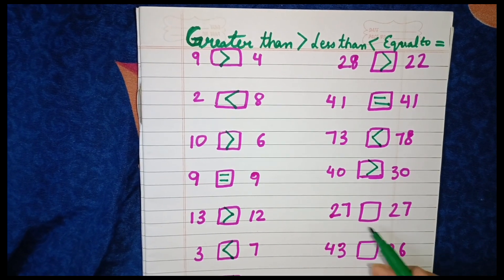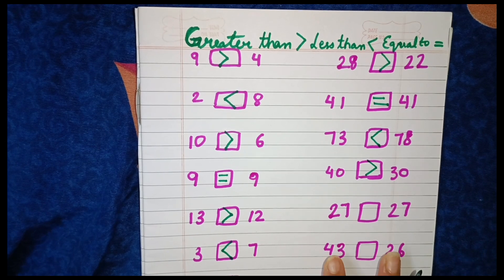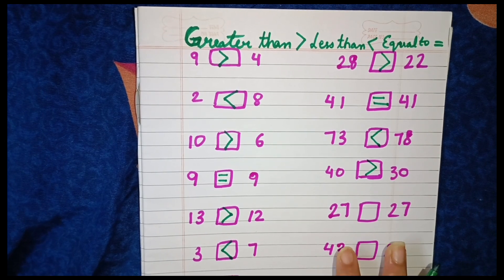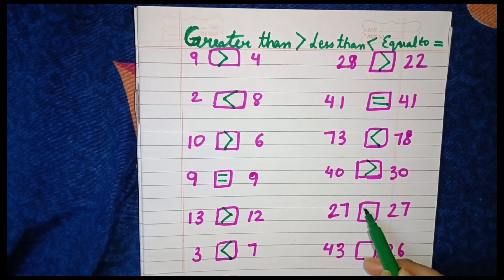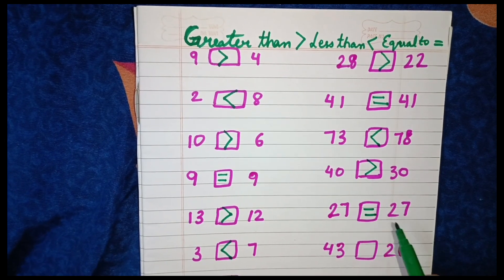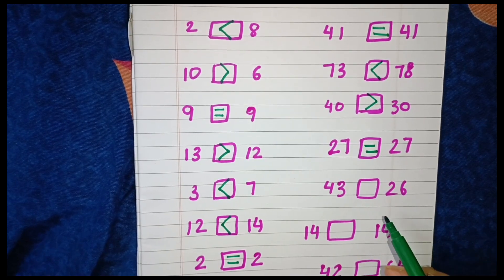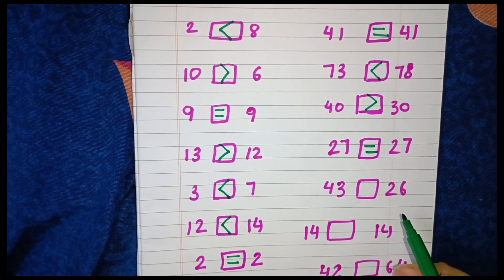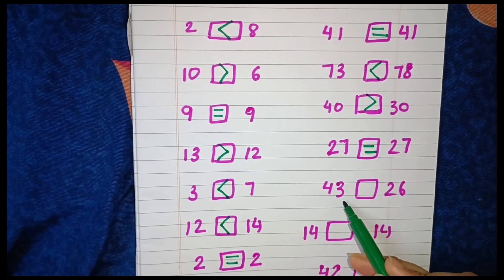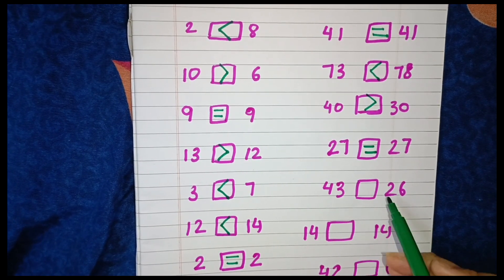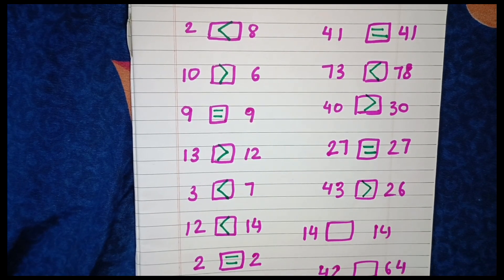Then we have 27 and 27. Again, the numbers are the same, so we will put here the equal to sign. Next, we have 43 and 26. We know that 43 is greater than 26, so we will put here the greater than sign.